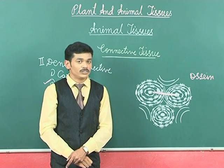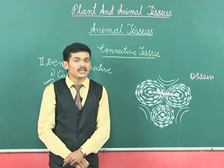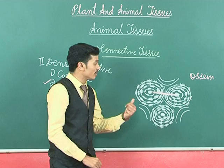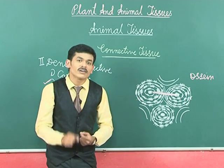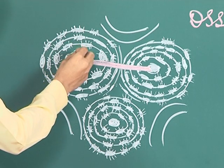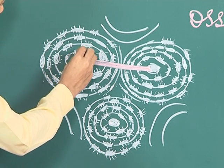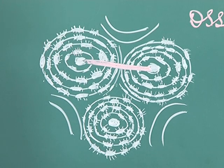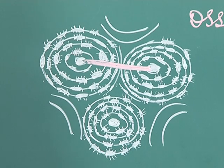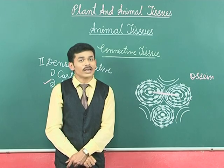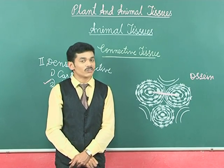In cartilage, we had seen that cartilage did not have blood vessels. But here in bone, they have a rich blood supply. There are some protoplasmic projections from the cells which lead into the canal and derive nutrition from the blood. So the bone is vascular, but the cartilage as we had seen was avascular.